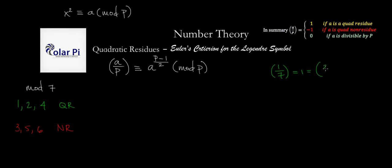Based on this, we expect that 1 over 7 will equal 1, as will 2 over 7 and 4 over 7. Additionally, we expect that 3 over 7 will equal negative 1, and so will 5 over 7 and 6 over 7.